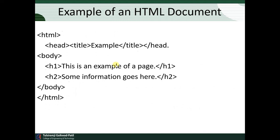Now let's look at a basic example of HTML. An HTML document has a basic structure: HTML, body sections, and closing tags. HTML contains a head section, which contains a title section with an opening and closing title tag, followed by a closing head tag. The body section shows the content we want to display. Here we display two elements — a heading 'This is an example of a page' and some information — then we close the body tag.